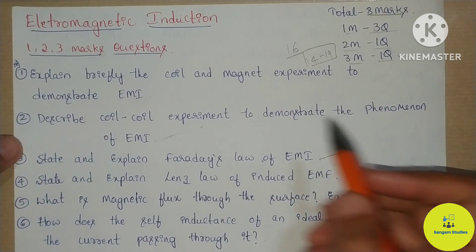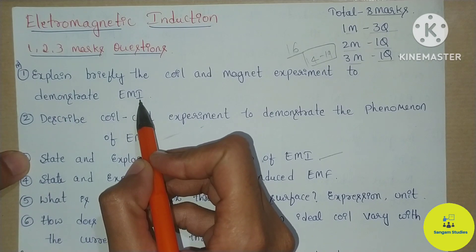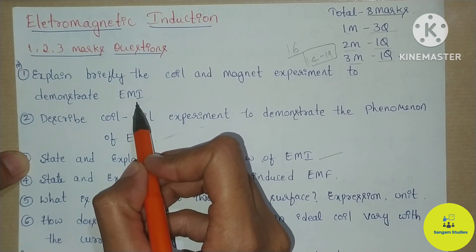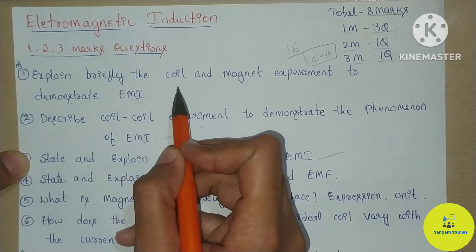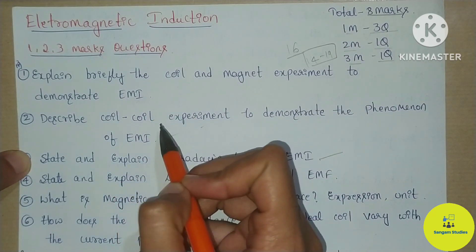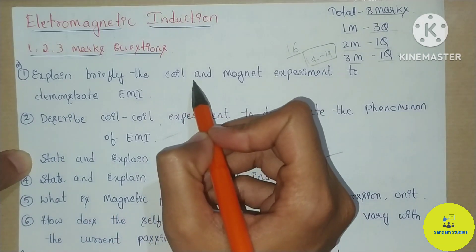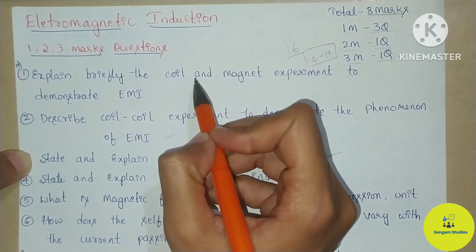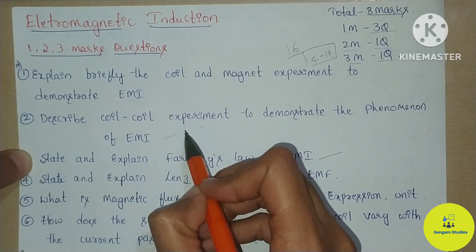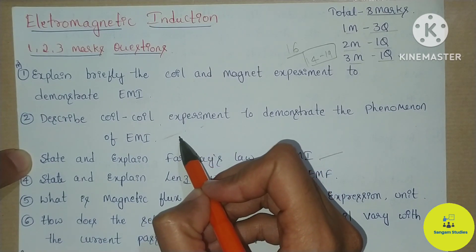The first question is to explain briefly the coil and magnet experiment to demonstrate electromagnetic induction (EMI). This question carries 3 marks in the model question paper. You will also need to explain the coil and coil experiment, which again carries 3 marks and was asked in the mid-term examination. I am going to mention this question here.